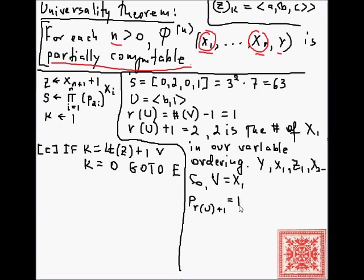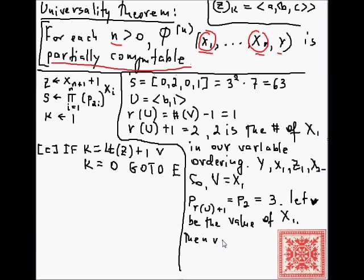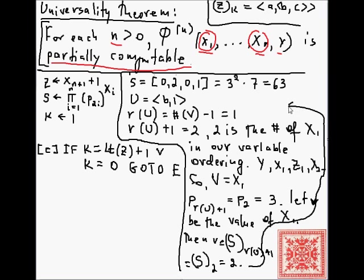p_{R(U)+1} is p_2, the second prime, which is 3. Let small v be the value of X1. Then v equals the accessor function at R(U) + 1 applied to our state, which equals 2, and 3^2 divides 63. We'll leave it here with the observation that p^v always divides the state — and this is to be continued.